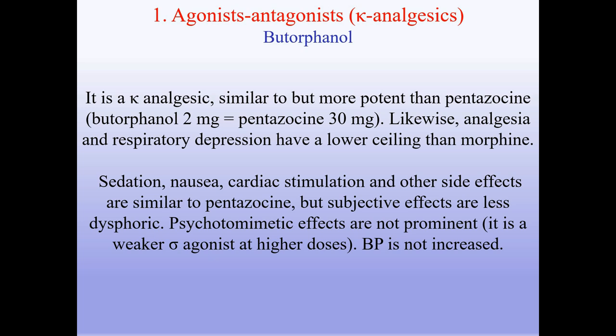Butorphanol is a kappa-analgesic, similar to but more potent than pentazocine — 2 mg butorphanol is approximately equal to 30 mg pentazocine. Analgesia and respiratory depression have a lower ceiling than morphine. Sedation, nausea, cardiac stimulation, and other side effects are similar to pentazocine, but subjective effects are less dysphoric. Psychotomimetic effects are not prominent; it is a weaker sigma agonist at higher doses. Blood pressure is not increased.